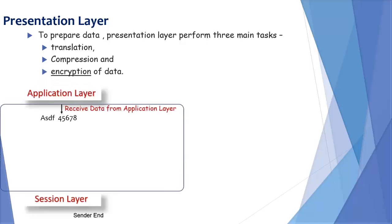Let's take a graphical example. Suppose from application layer, data is received — the data is 'SDF45678'. This data is not understandable by a machine, so it is translated into binary or machine code.